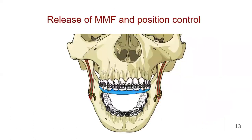If internal fixation has been applied, the MMF is released and the resulting occlusion is checked against the pre-planned position. The splint may be fixed to the maxillary teeth with a few thin wires and left in place during the healing phase to allow for neuromuscular adaptation and position control.